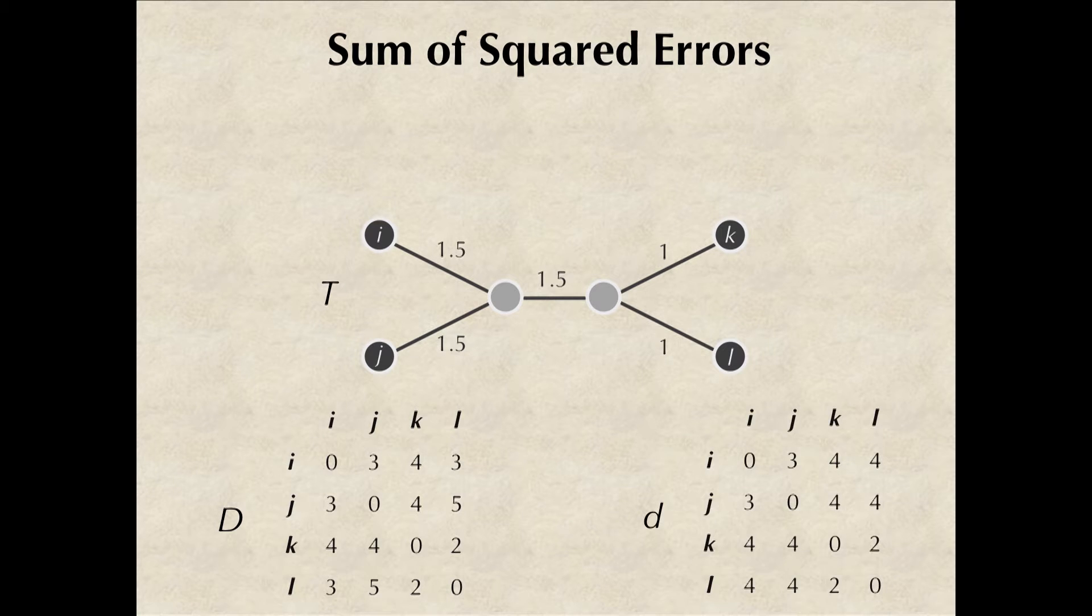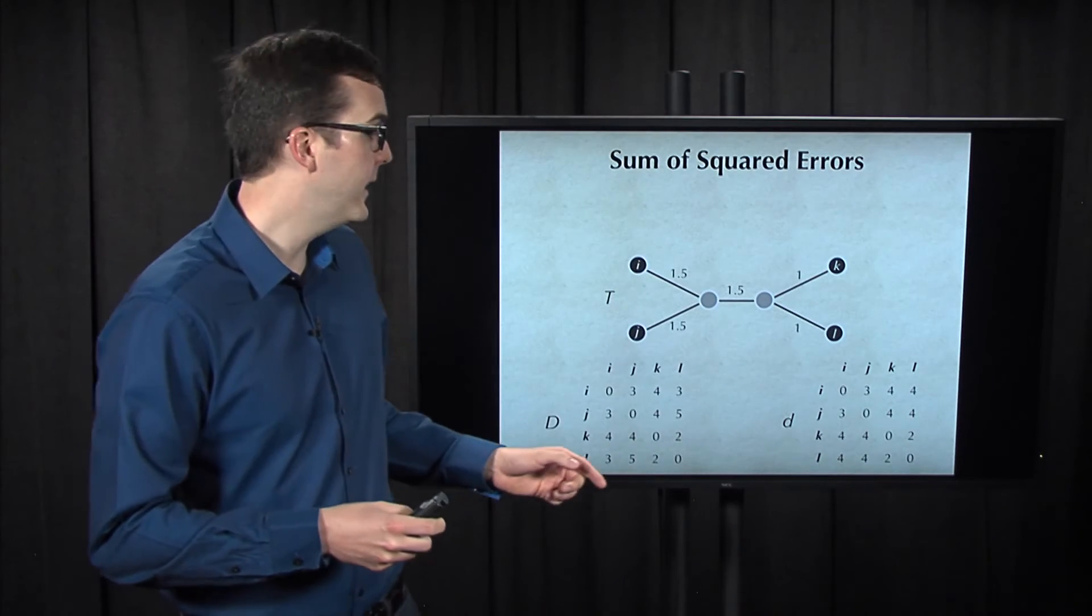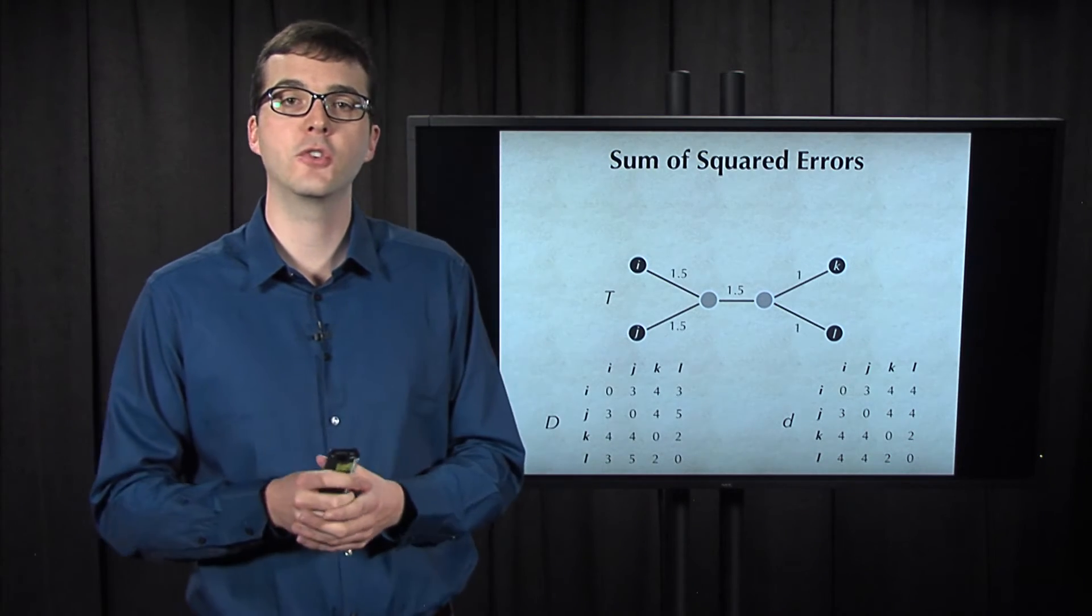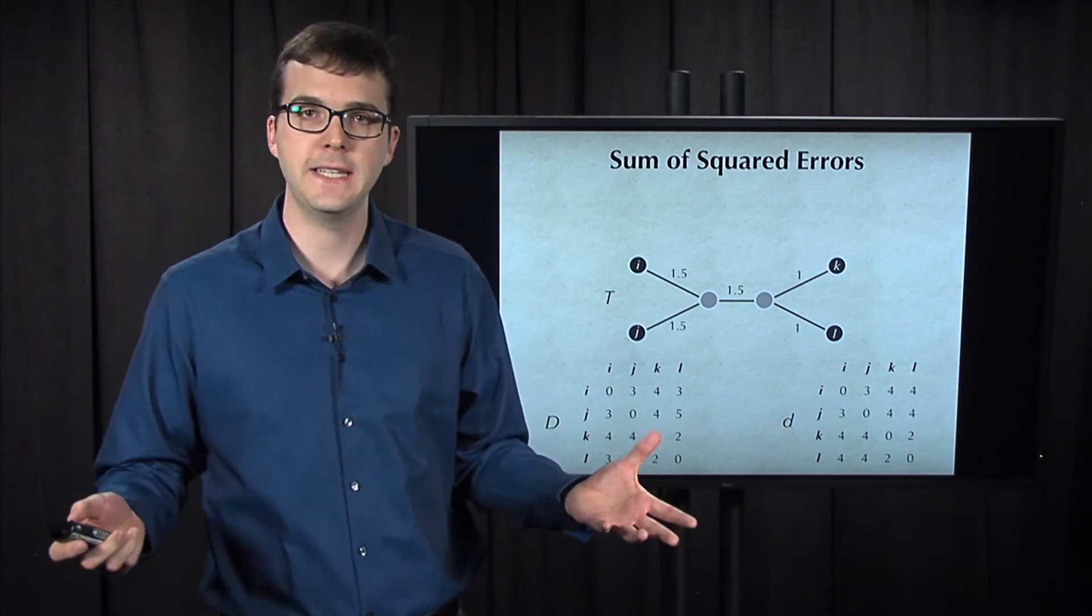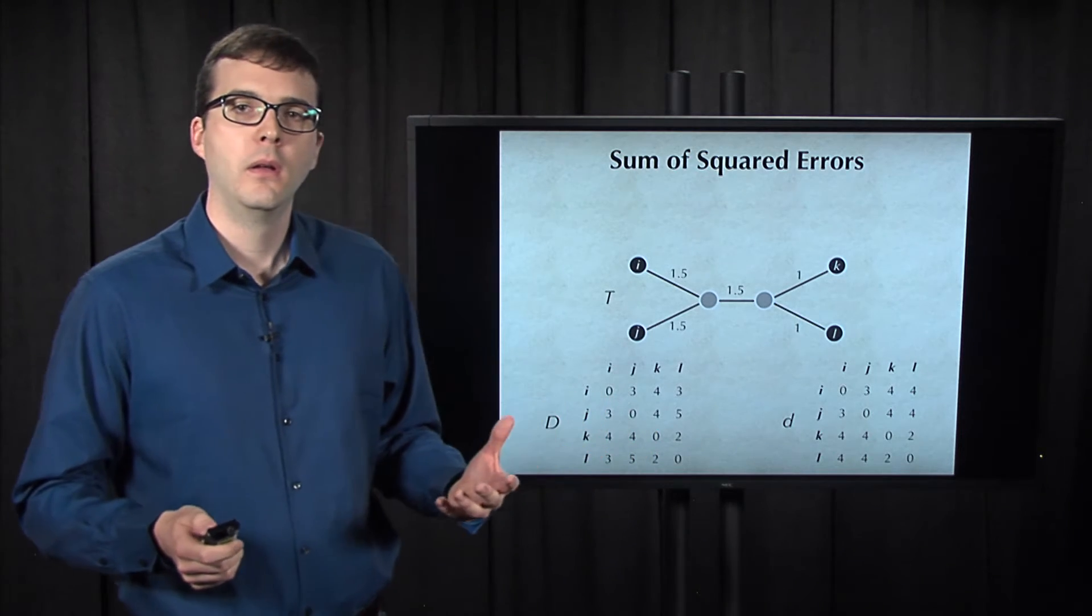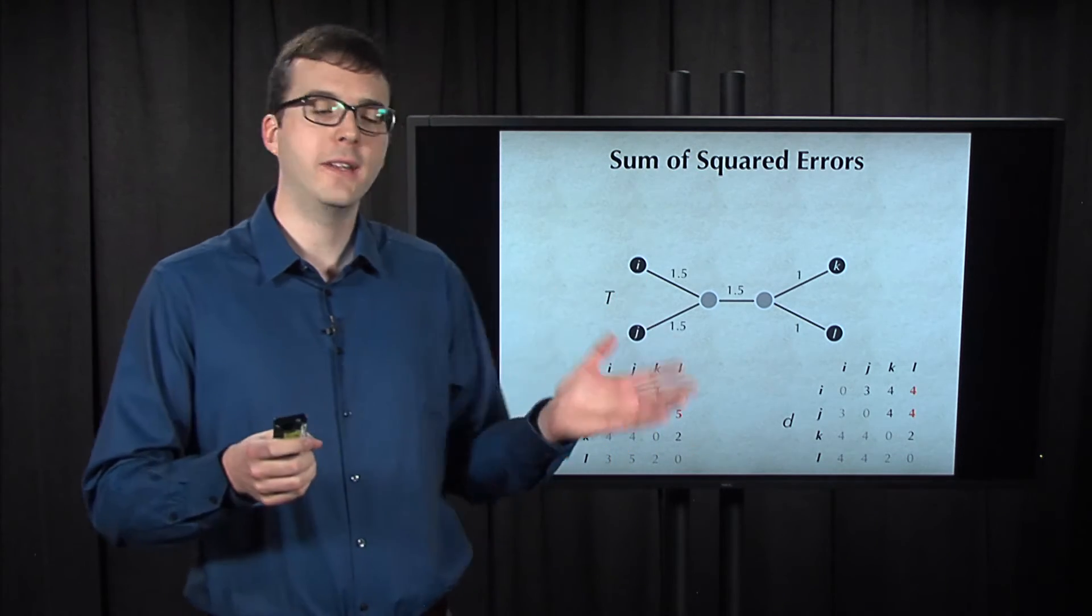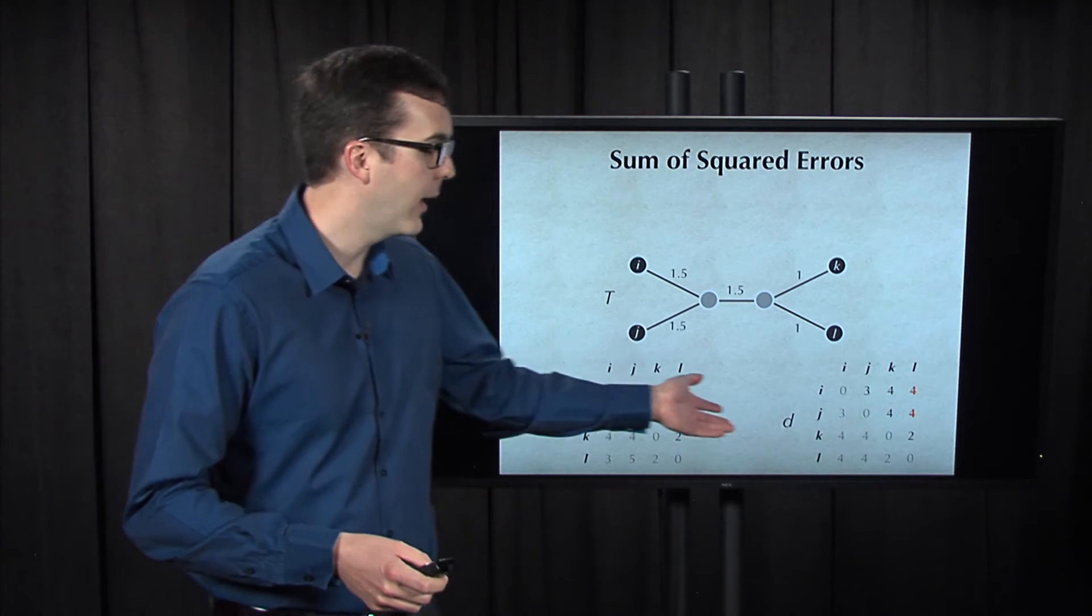To measure how close this tree is to the distance matrix, we need to compare the entries in D, i.e., uppercase D, with the distance between the corresponding leaves in the tree, i.e., lowercase d. The matrices are symmetric, so we only need to consider the entries above the main diagonal.